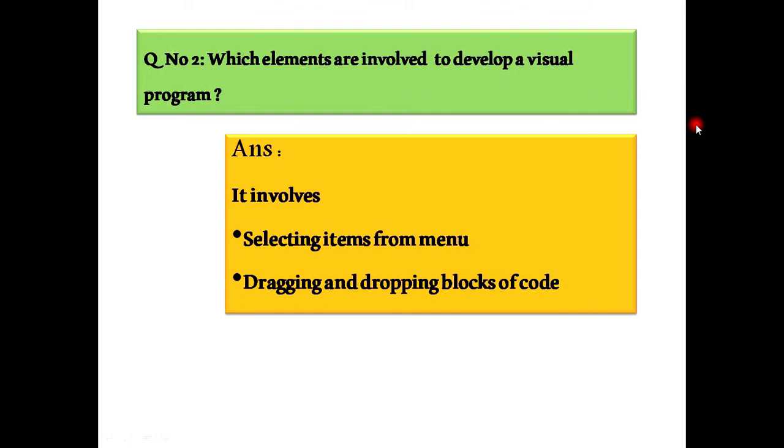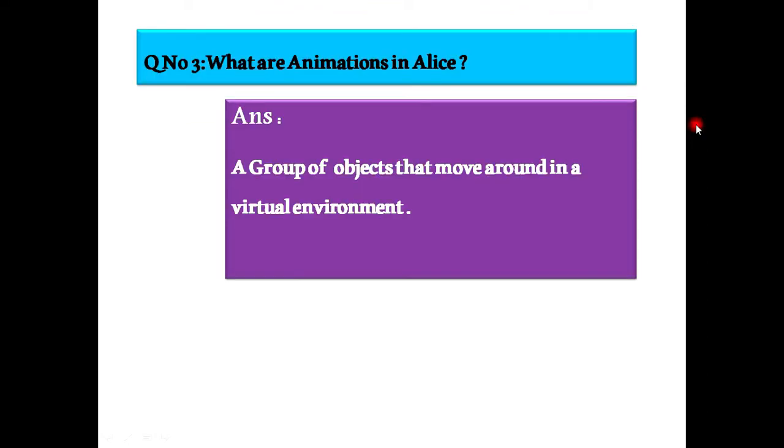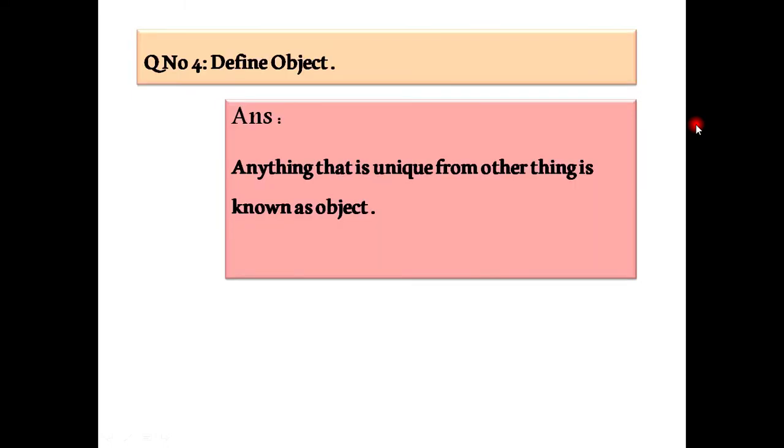Question number three: What are animations in Alice? A group of objects that move around in a virtual environment. Question number four: Define object. Answer: Anything that is unique from other thing is known as object.